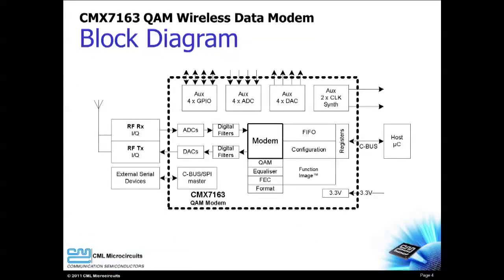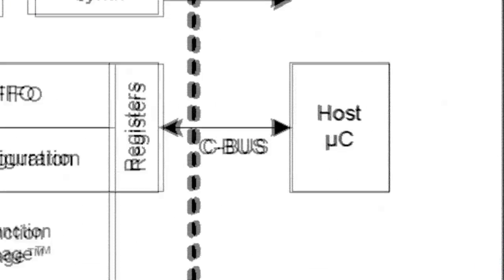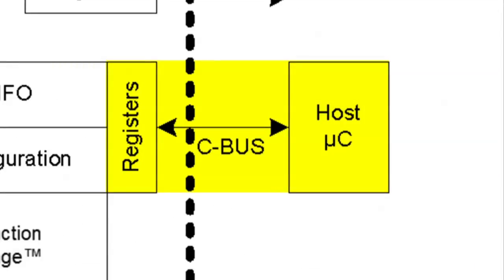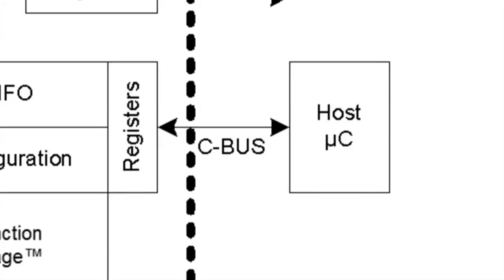The CMX7163 also includes helpful auxiliary functions that reduce your external parts count and bill of materials cost. The microcontroller communicates with the CMX7163 using a simple four-wire serial interface. Streaming data transfers help to minimize the microcontroller workload.